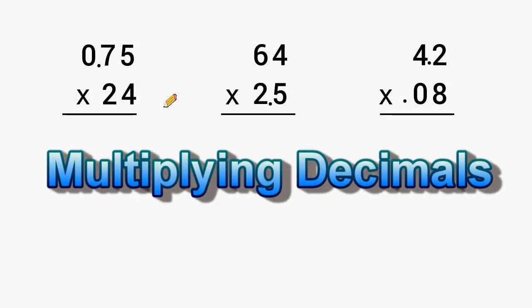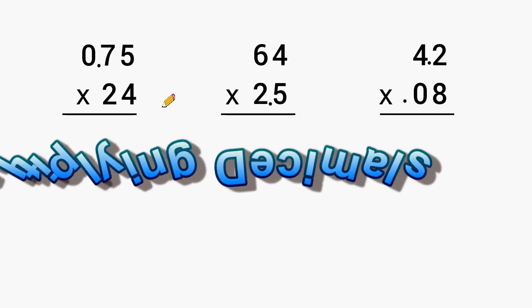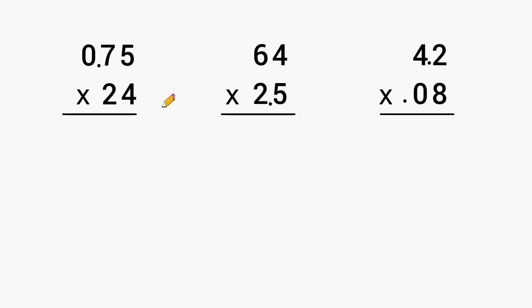Alright, what we're going to do in this tutorial is just review how to multiply numbers with decimals in them using the standard algorithm. Let's start with 75 hundredths multiplied by 24.